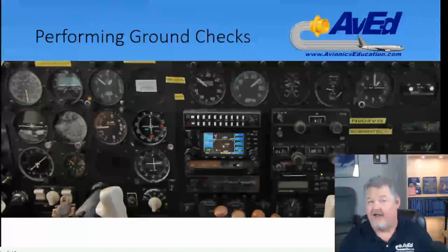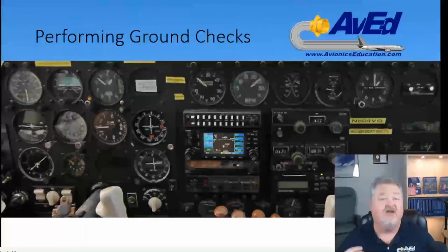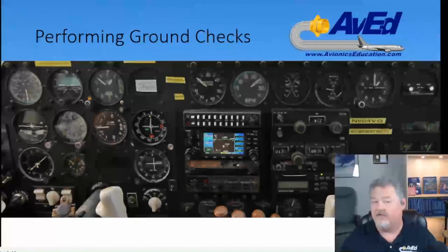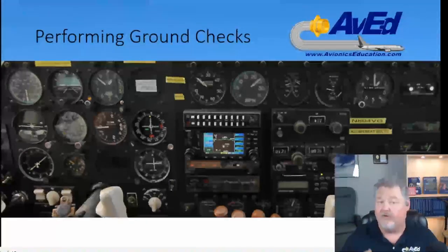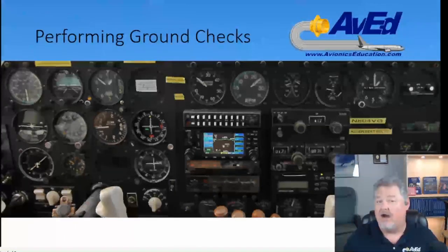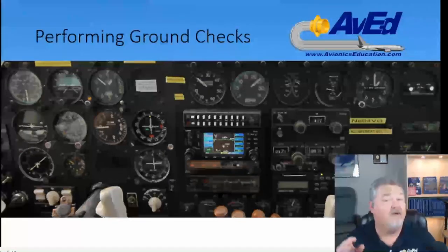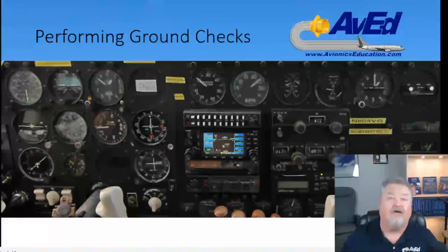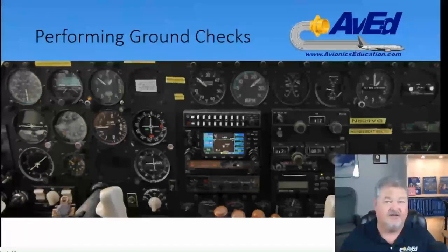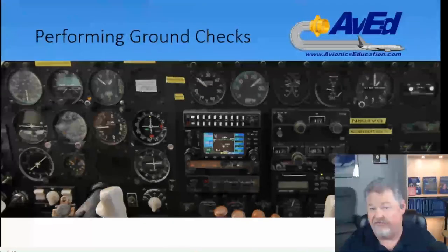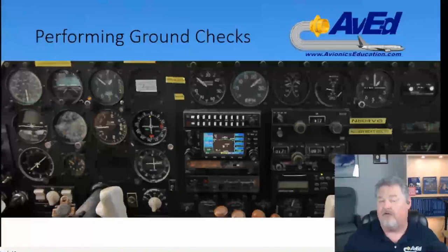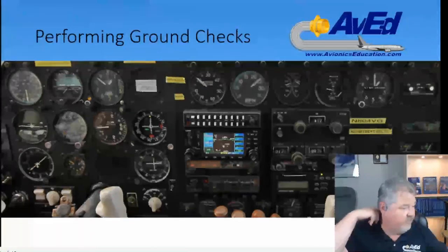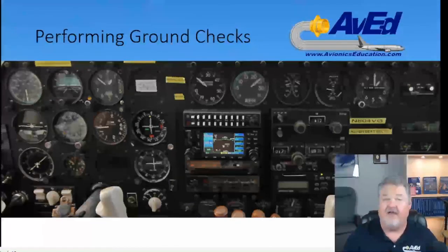One of the first things to understand about performing a ground check on an autopilot system is that you need to understand there are different interlocks — or conditions — that have to be met before the autopilot system can be turned on. An interlock is a safety feature built into the autopilot to ensure the aircraft is in a safe condition to engage. For example, you don't want to engage the autopilot while the flight controls are in a turn and you've got it programmed for straight and level. Or you don't want to engage the nav mode if it doesn't have a navigation signal coming to the autopilot.